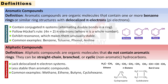Key characteristics of aliphatic compounds are: 1. They lack delocalized pi electron systems. 2. They are less stable than aromatic compounds. 3. Common examples of aliphatic compounds are methane, ethene, cyclohexane, etc.